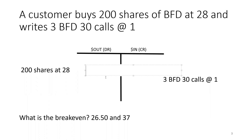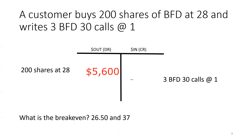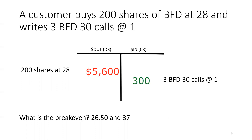So here we paid for 200 shares at 28, so that's going to be $5,600 we paid out for the stock. And then we brought in $300 for the BFD calls — three of them, please note. That's going to be $300 there. So that's kind of my initial setup.